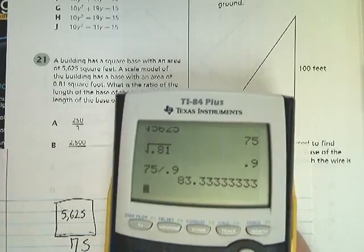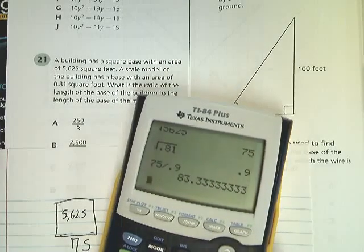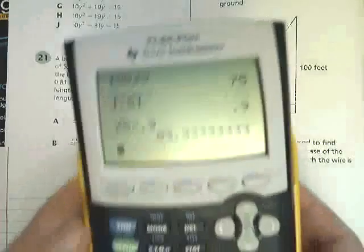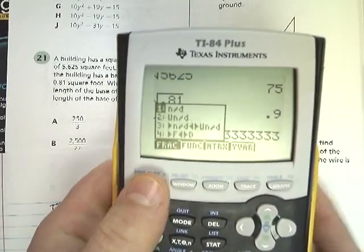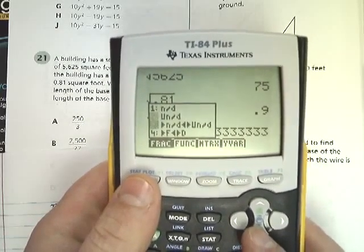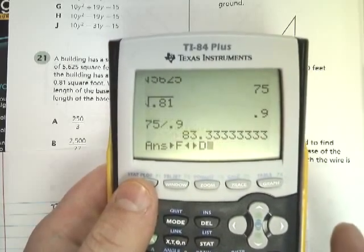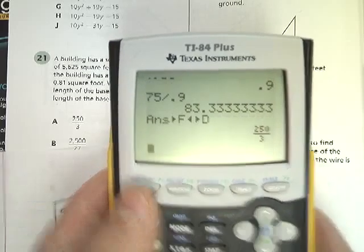But what am I going to do with that? It's much easier if I can analyze this in terms of a fraction. So I'm just going to go up and hit alpha, hit the y equals button to open that fraction menu, and convert it from fraction to decimal, 250 over 3.